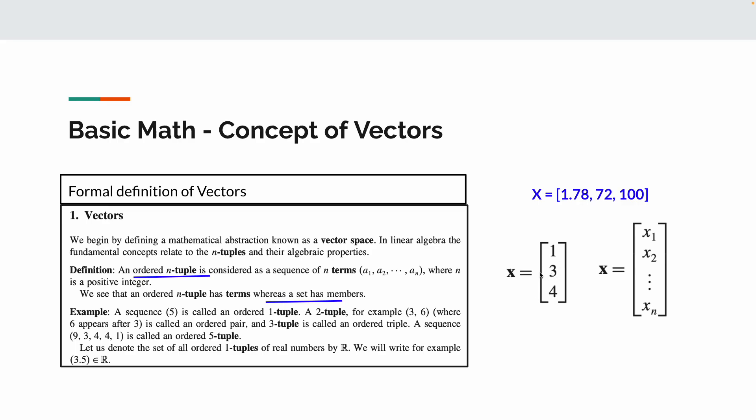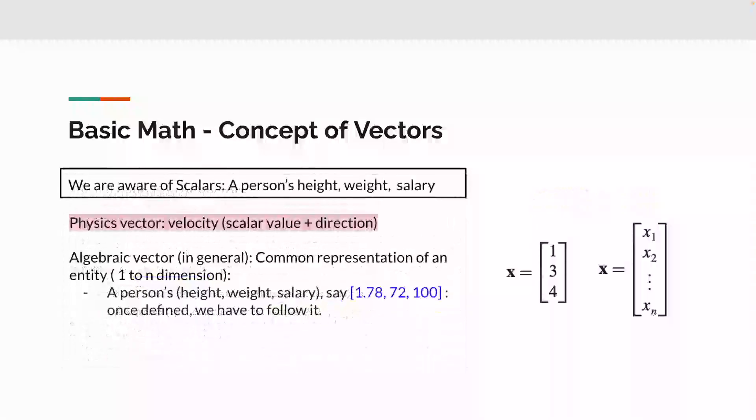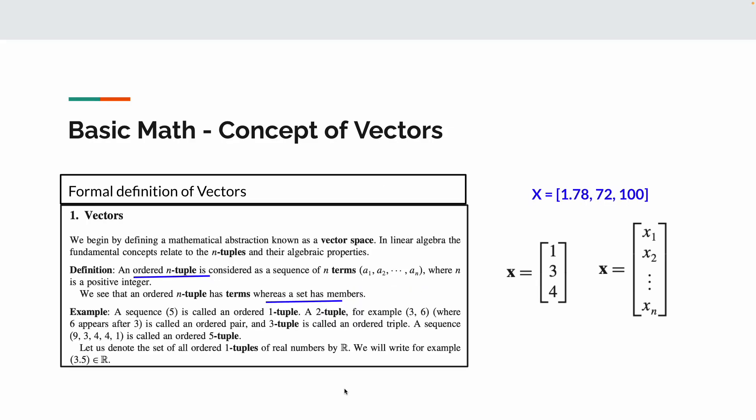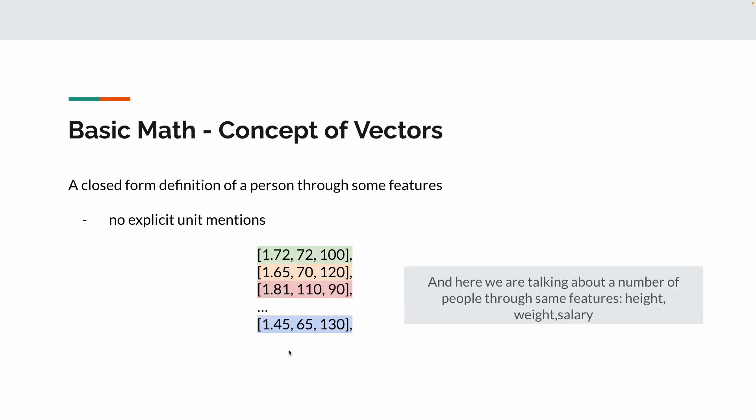The definition of vector is slightly different in case of our data science activities. If you go to physics definition of vector, they will tell that the vector should have a value and also the direction. But in our case, as simple as it is, you can think of it as a record in your table - a row or maybe a column in your table. That's our vector.